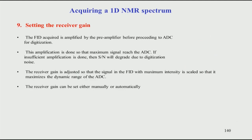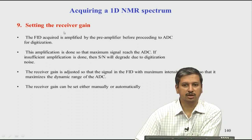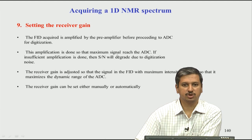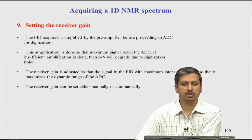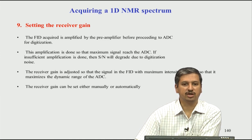After the pulse is applied, there is a hardware component called the receiver that receives the signal. To receive the signal at maximum amplitude, the intensity of the FID is amplified by adjusting the gain in the receiver. This amplification ensures that the maximum signal reaches the ADC — the analog-to-digital converter. The receiver gain simply scales up the signal, but remember noise is always present, so the noise also gets amplified. Both signal and noise are amplified and fed to the ADC.